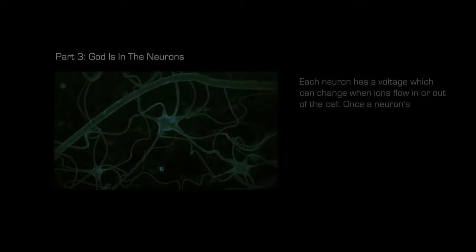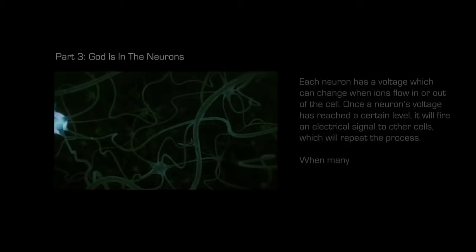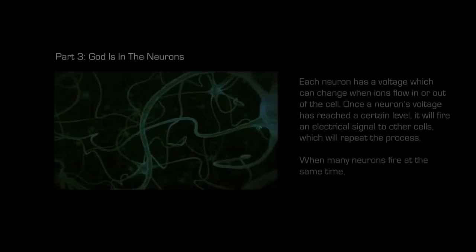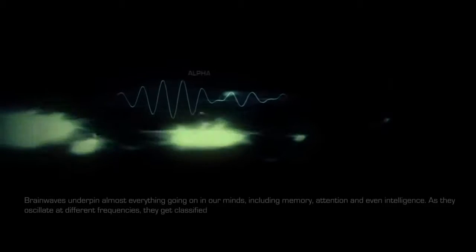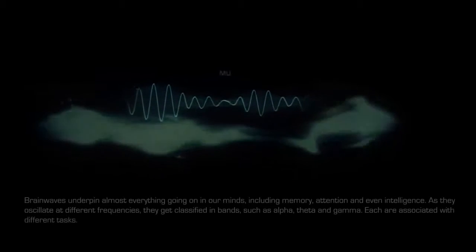Each neuron has a voltage which can change when ions flow in or out of the cell. Once a neuron's voltage has reached a certain level, it will fire an electrical signal to other cells, which will repeat the process. When many neurons fire at the same time, we can measure these changes in the form of a wave. Brain waves underpin almost everything going on in our minds, including memory, attention, and even intelligence. As they oscillate at different frequencies, they get classified in bands such as alpha, theta, and gamma. Each are associated with different tasks.